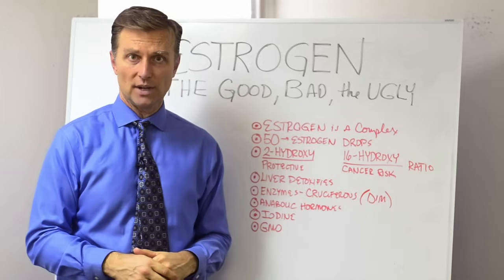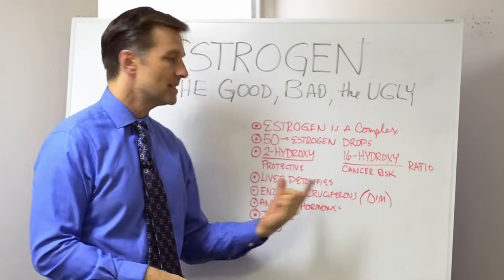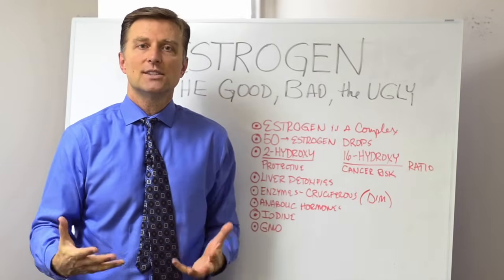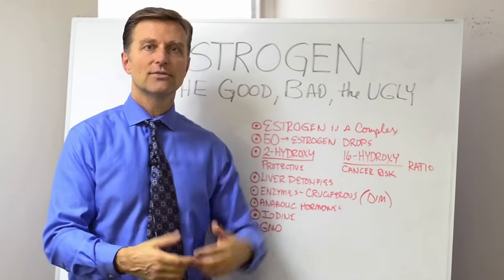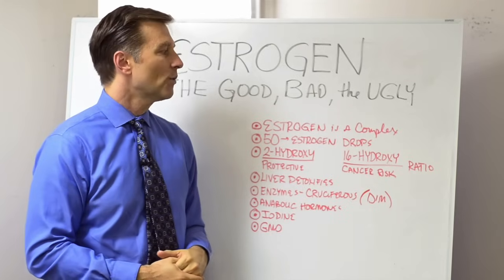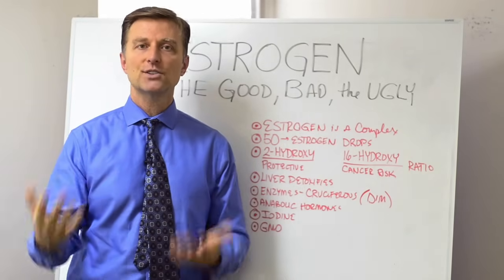So DIM is a concentrate, and you can get it as a pill or just consume cruciferous itself to get that protective mechanism. Thank goodness there are natural things that we can get from food to balance our estrogen, because right now we are bathed in a sea of estrogen.